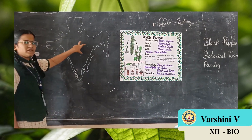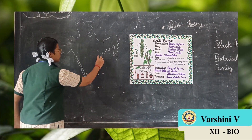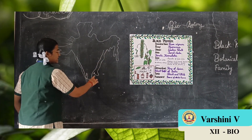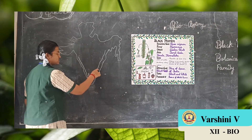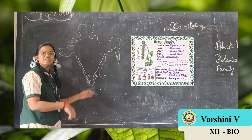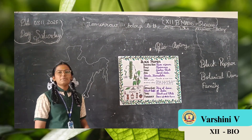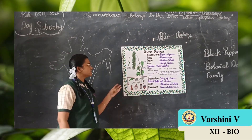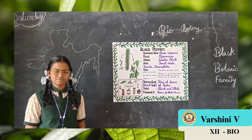This is our Indian map. This is the place of Western Ghats of India — it is about the place of Tamil Nadu, Andhra Pradesh, Karnataka, and Kerala. The top producers of black pepper are the states Tamil Nadu, Kerala, and Karnataka.